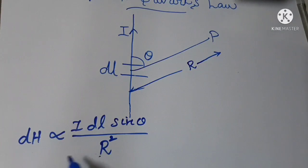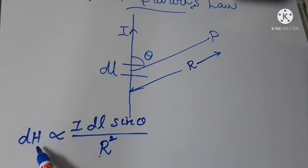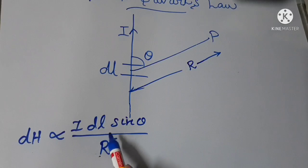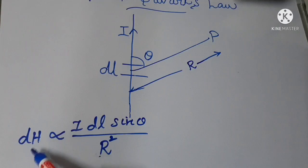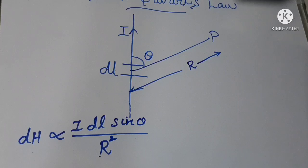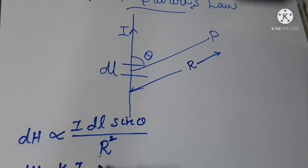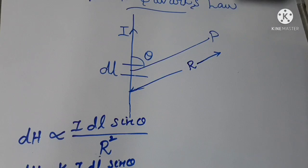This is the expression for Biot-Savart's law. dH is directly proportional to IDL sin(theta) divided by R squared. By equating this and adding proportionality constant K, dH is equal to K IDL sin(theta) divided by R squared.